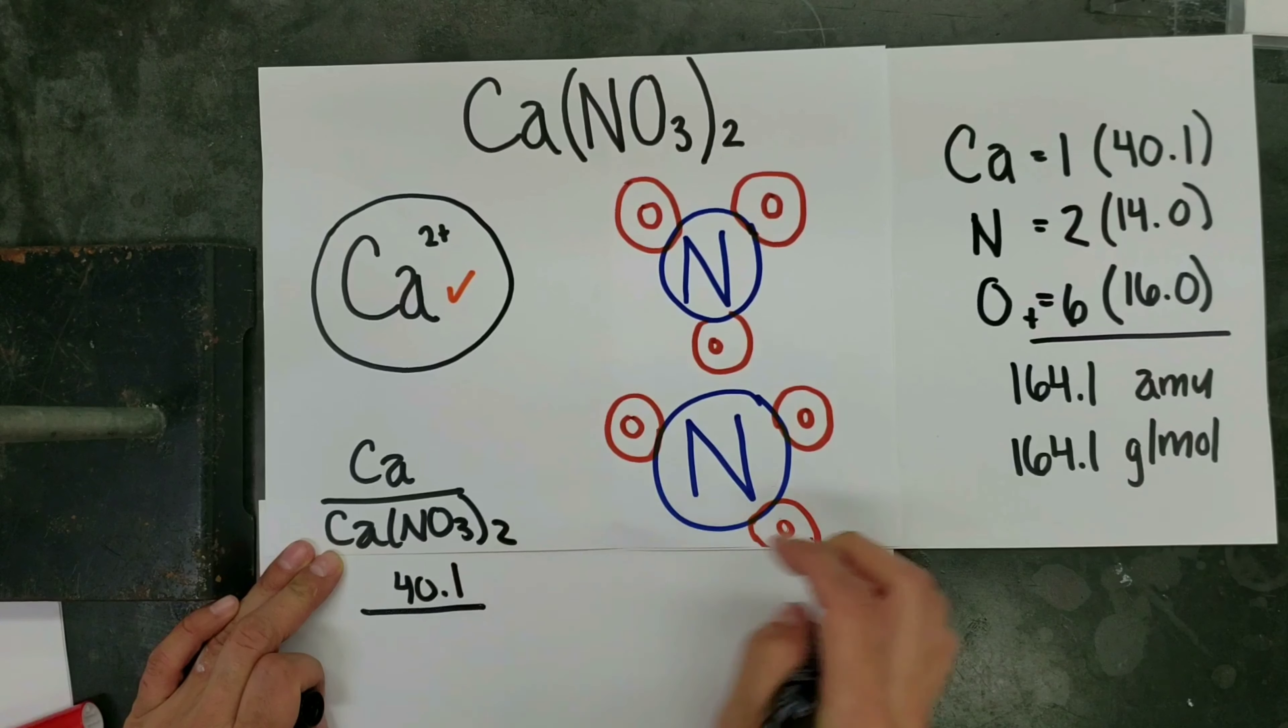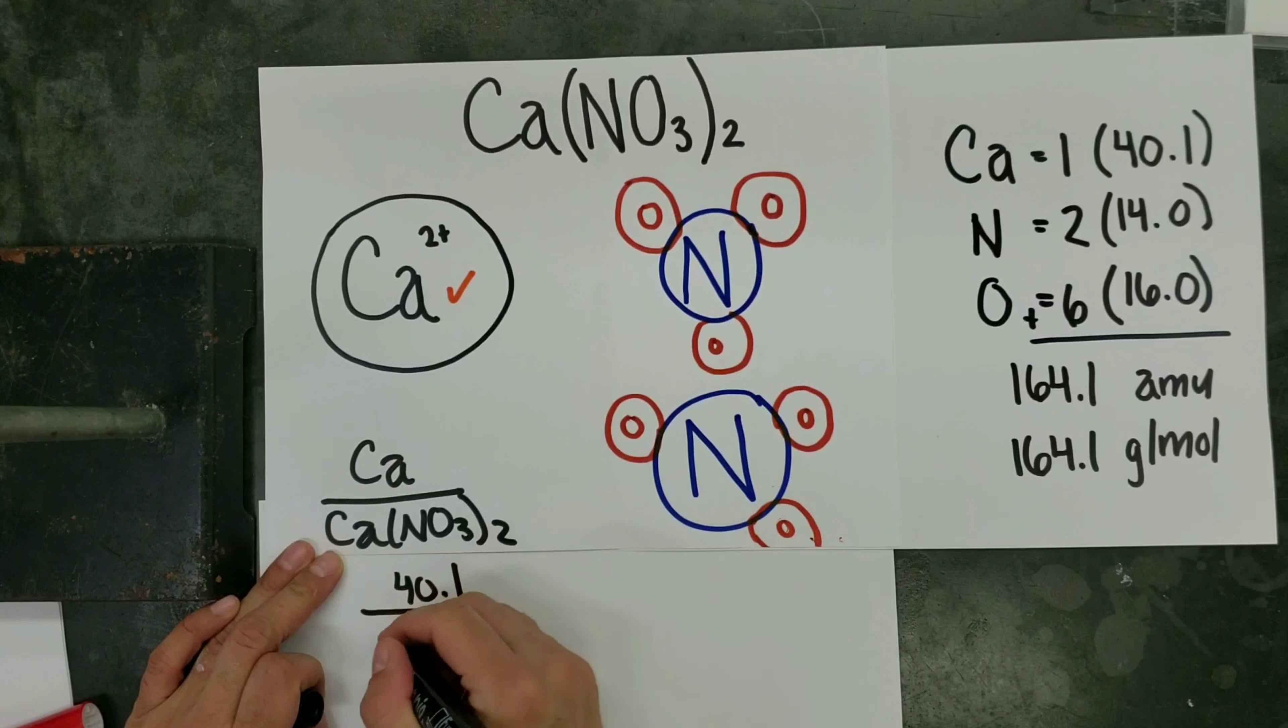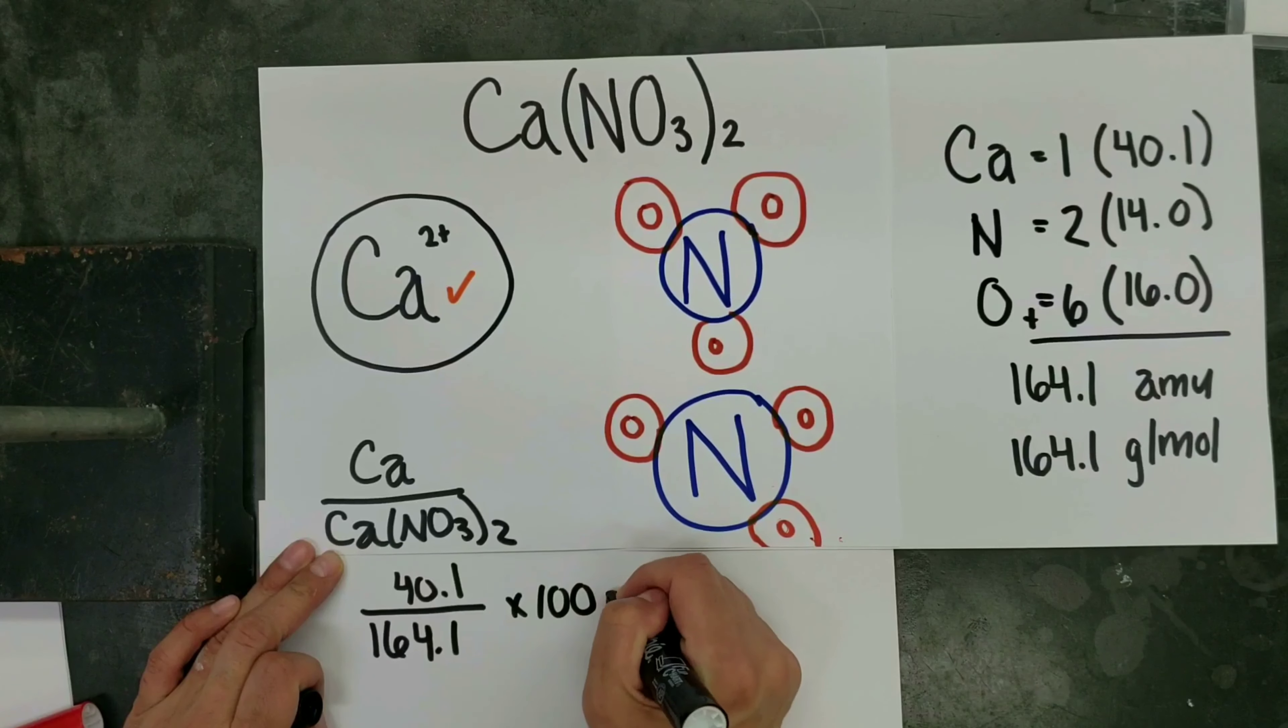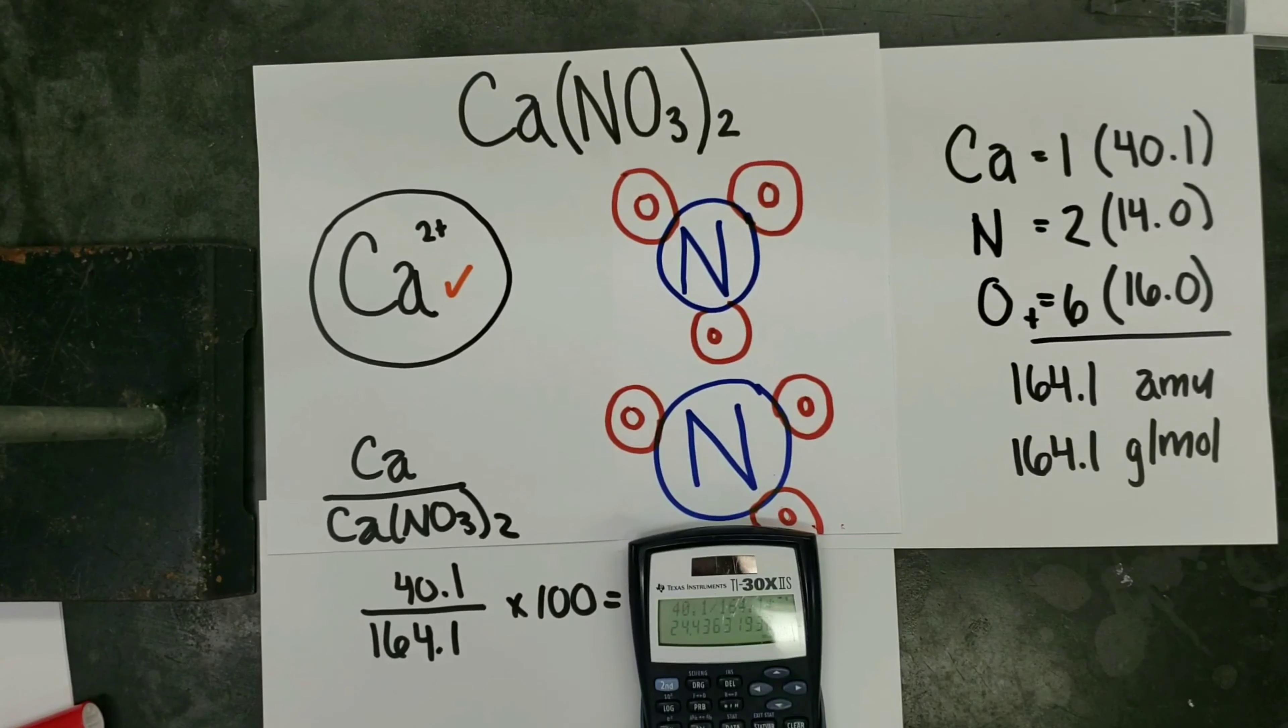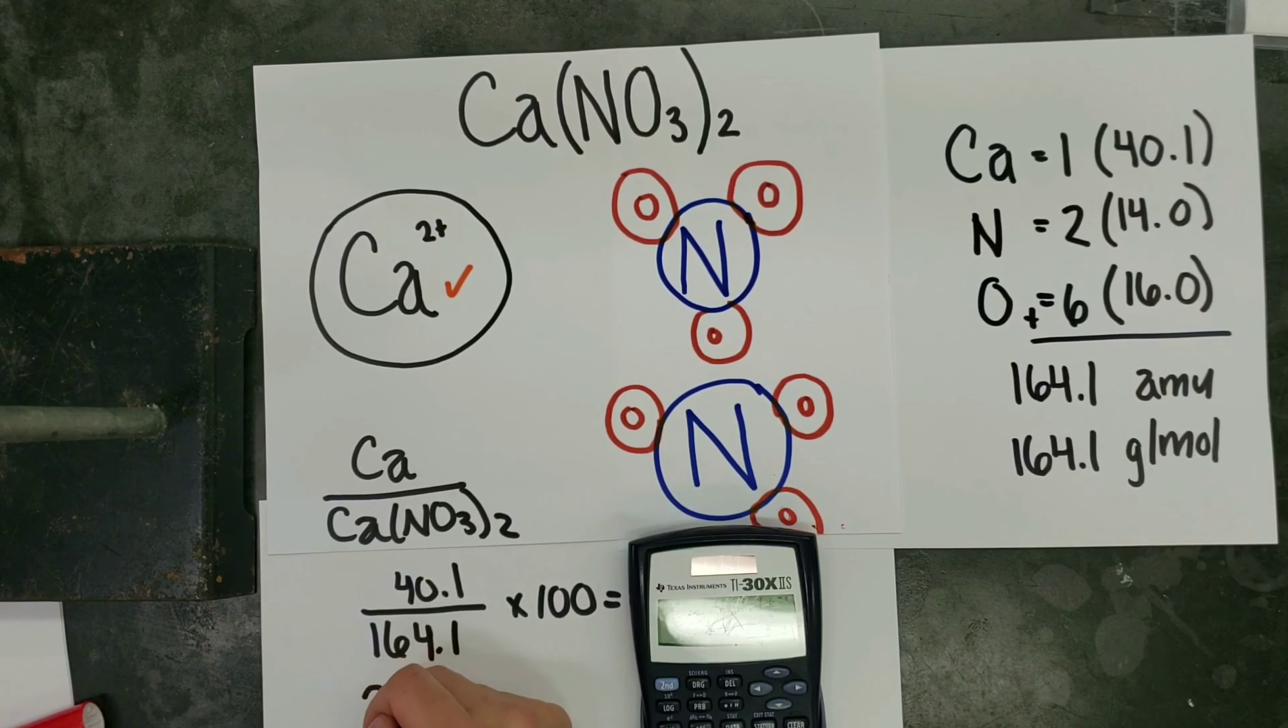Times 100 to get the percent by mass of calcium. And our calculator gives us a final percent by mass of 24.4%.